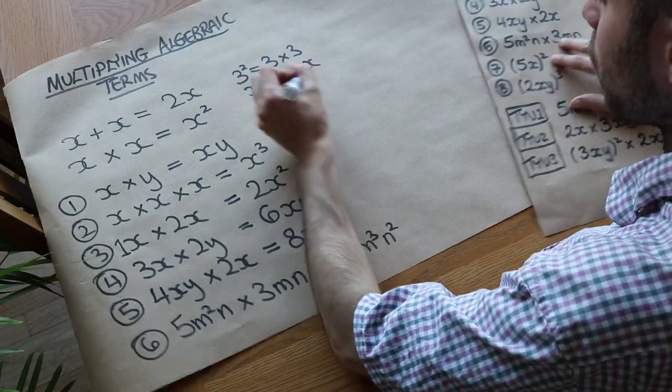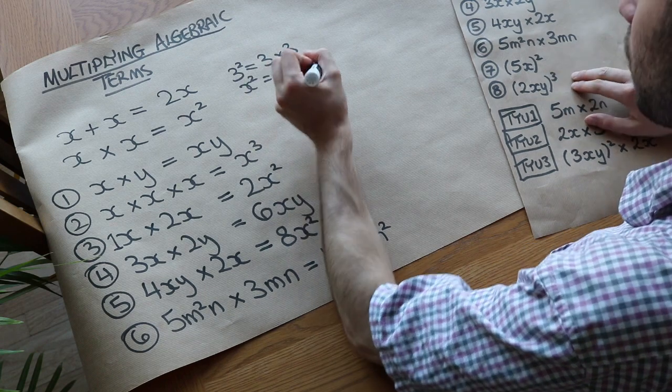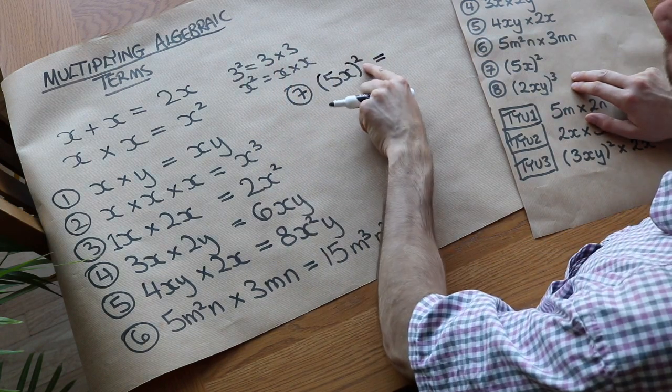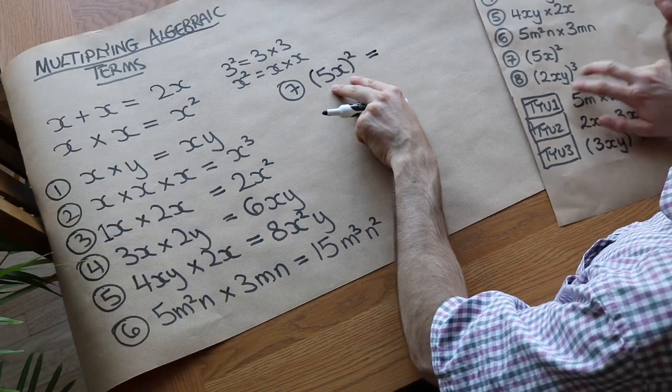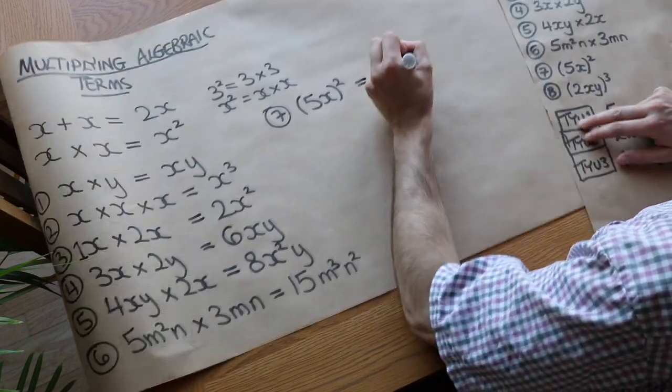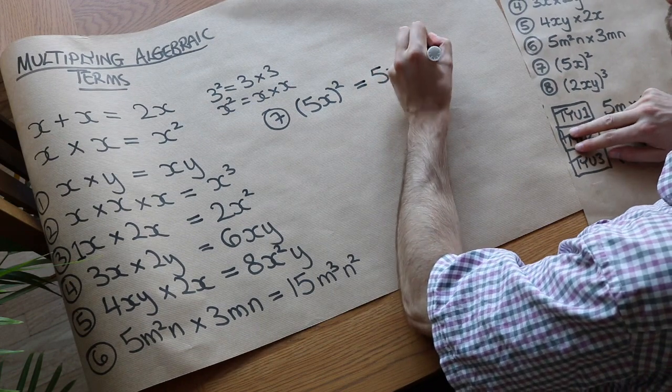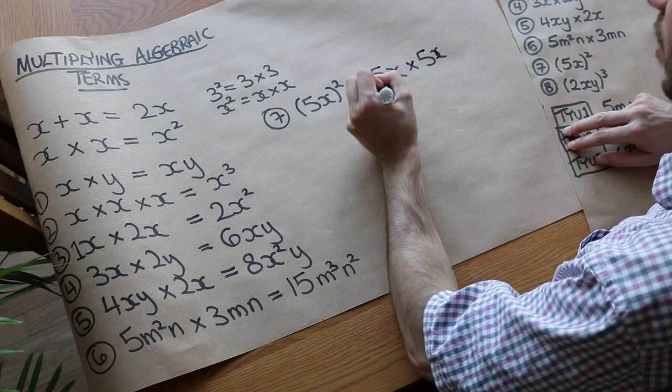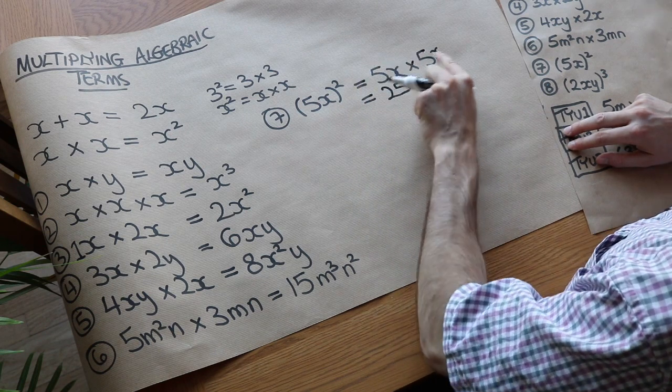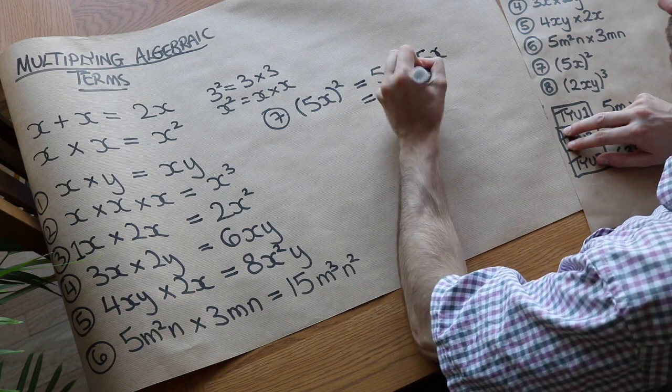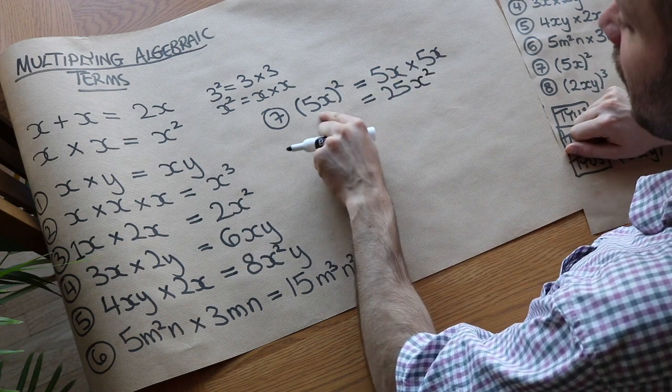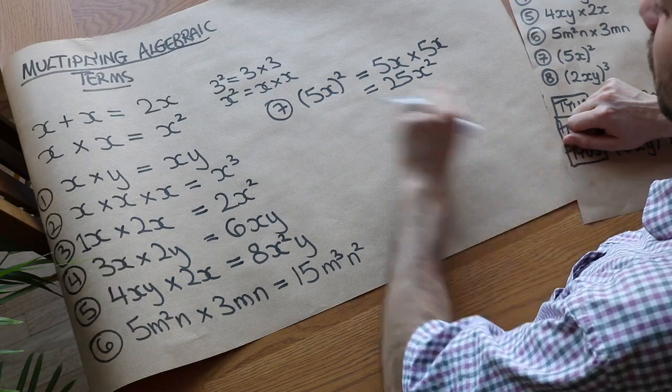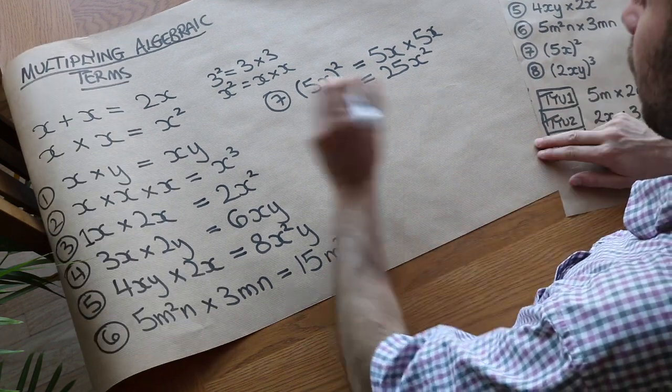A few more. We've got question seven. We've got 5x squared. Now, remember that when we square something, it means that thing times by itself. So we could write that as 5x times by itself. And then we do the usual thing. So 5 times 5 is 25. And then the x times x is x squared. A common mistake that students make is that they then think that's 5x squared rather than 25x squared because they don't square the 5.